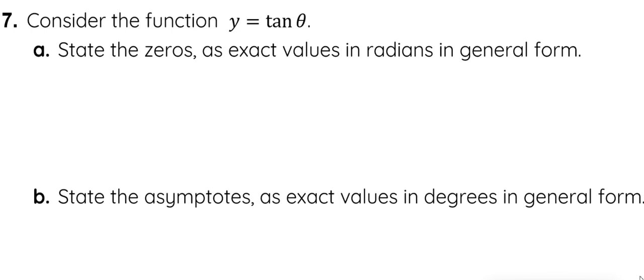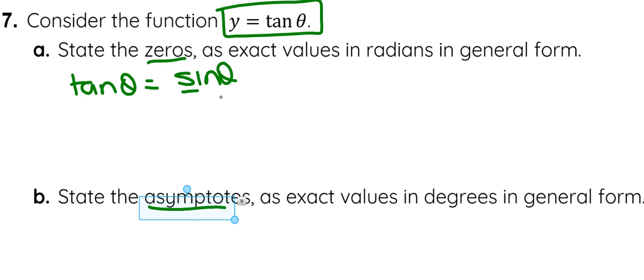Okay, in this question we're looking at tangent of x and we're looking to find the zeros and the asymptotes in general form. So let's look at what tangent is. Tangent theta is the ratio of sine theta over cosine theta. That is found on your formula sheet.